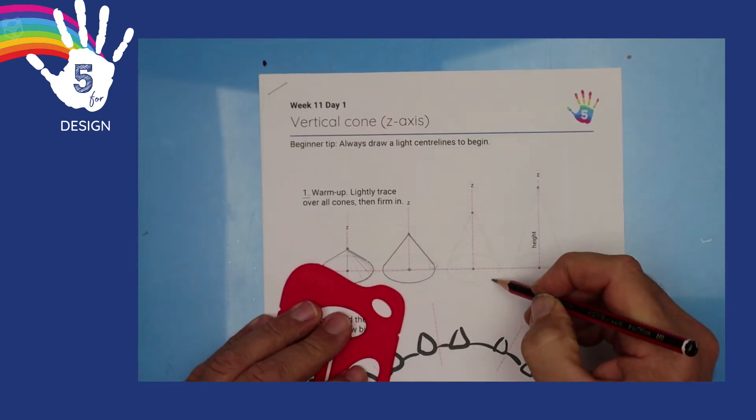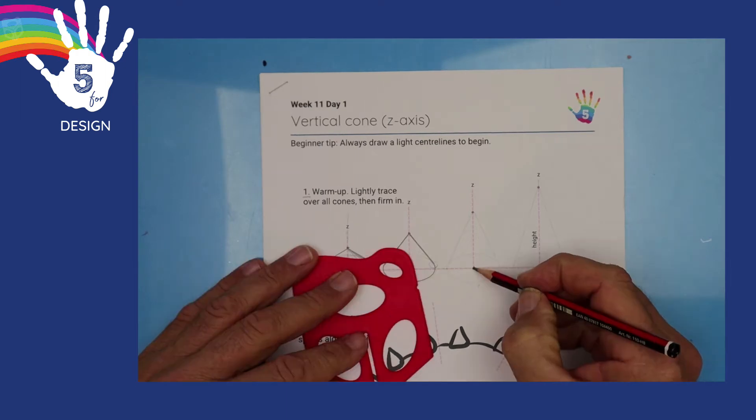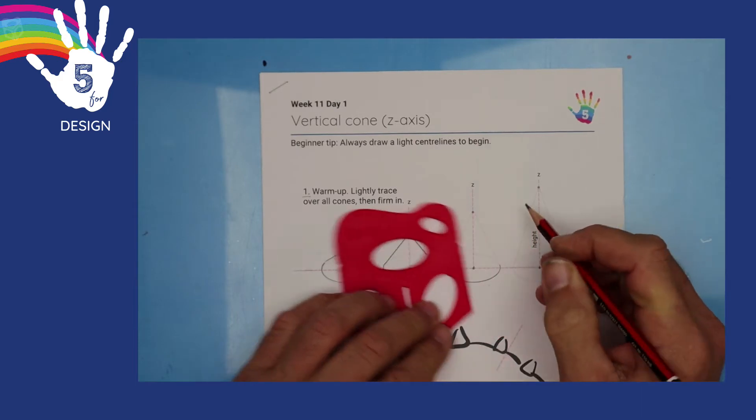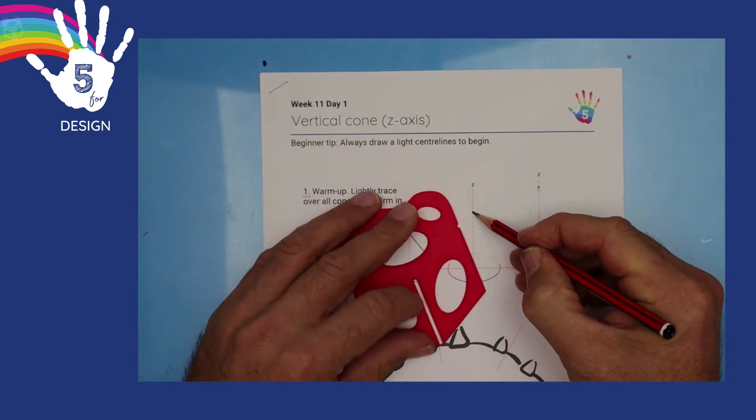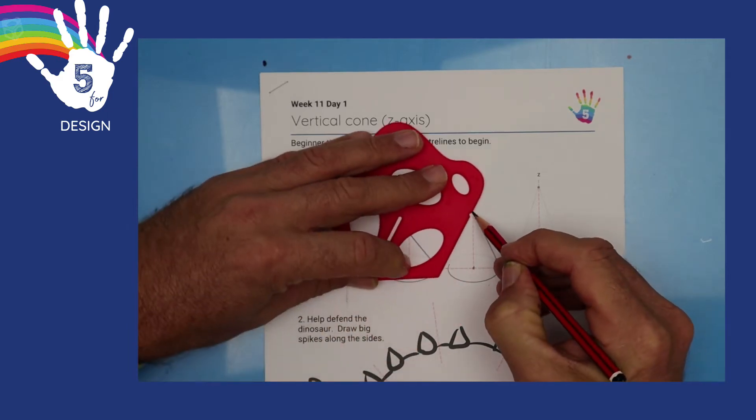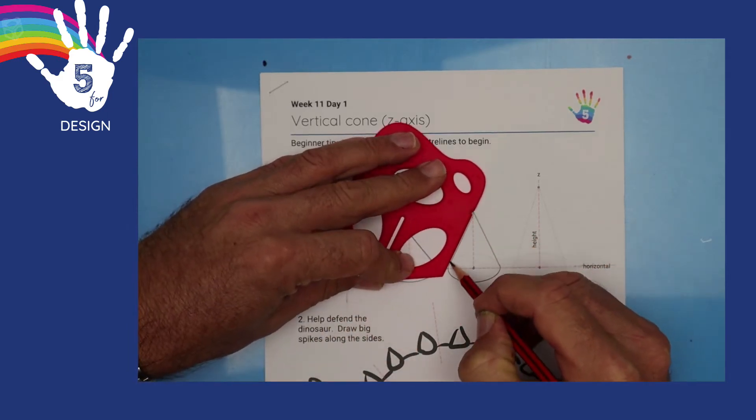Aren't cones great? Ice cream cones? This one looks more like an ice cream cone, upside down. Hopefully not spilt. So again, we're drawing in the half an ellipse, and then simply joining to the apex. Let's draw an even taller cone.